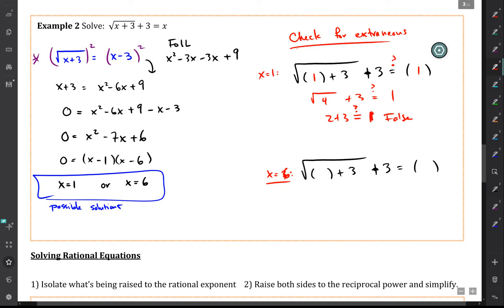But if I plug in x equals 6, I do get a solution because I'll get the square root of 9 plus 3 is equal to 6. Well, I'm saying 3 plus 3 equals 6. So this does work, and so the takeaway here is that the only solution is x equals 6.